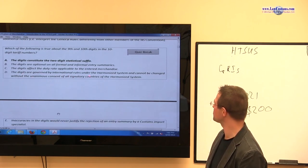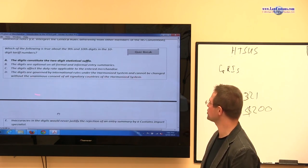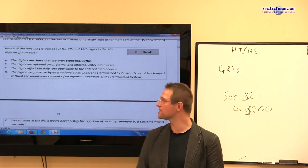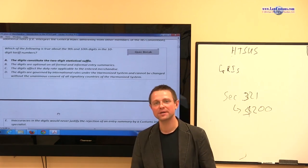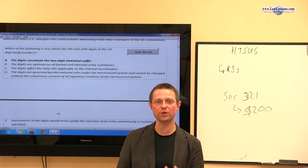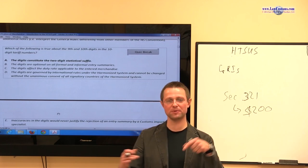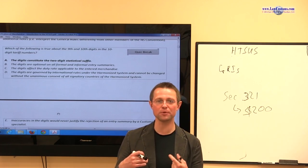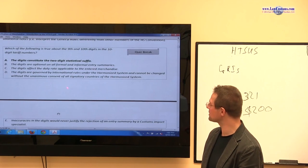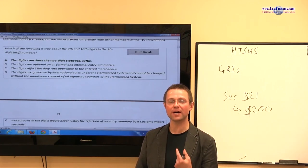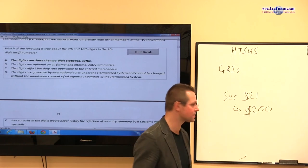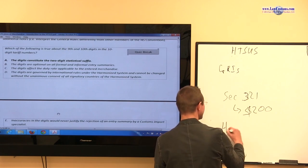Next on the list is D, the digits are governed by the international rules under the harmonized system and cannot be changed without the unanimous consent of all signatory countries of the harmonized system. Well, this means that because customs examiners ask you about this, you have to have a historical awareness of how the harmonized system came into being and how it became adopted and how it is managed at the international level.